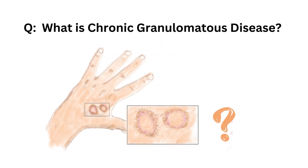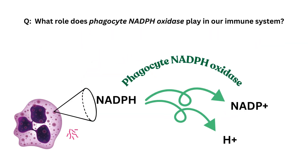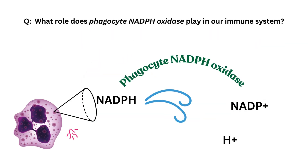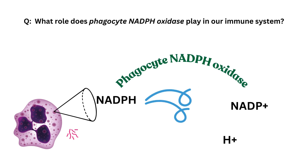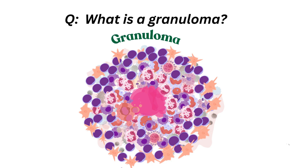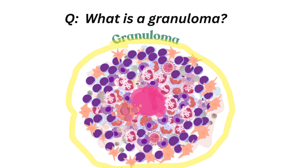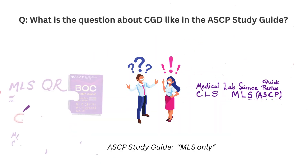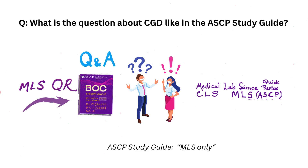We will do our best to answer several questions about CGD. First of all, what is chronic granulomatous disease? What role does phagocyte NADPH oxidase play in our immune system? What is a granuloma? Finally, what is the question about CGD like in the AACP study guide? Stay tuned for the Q&A to follow.